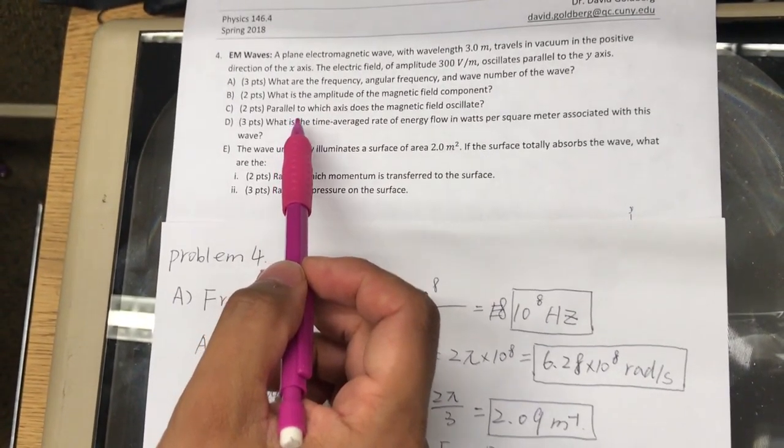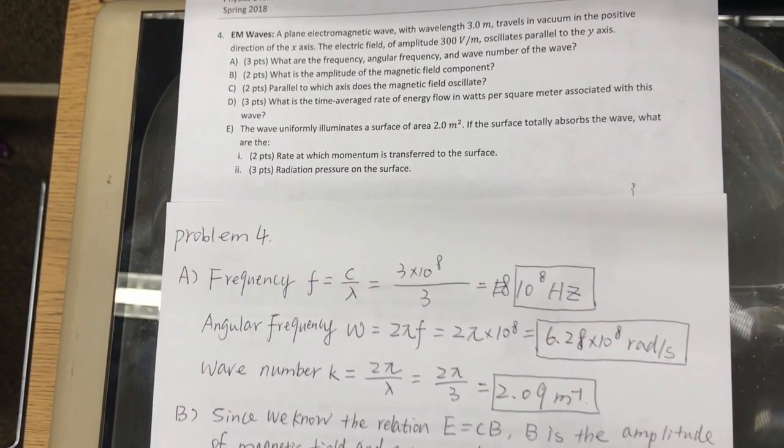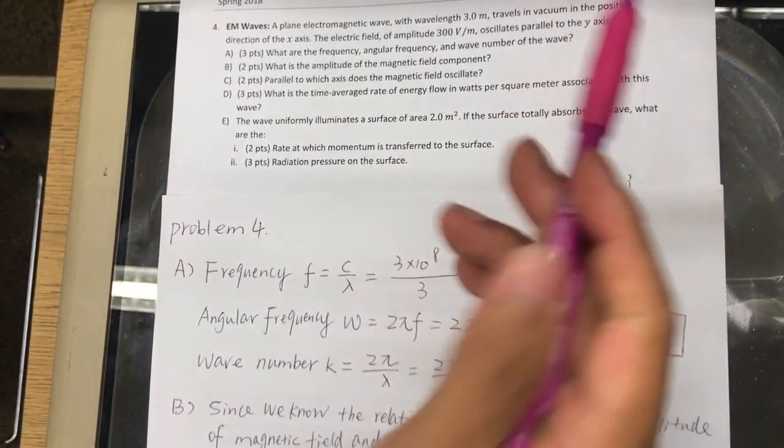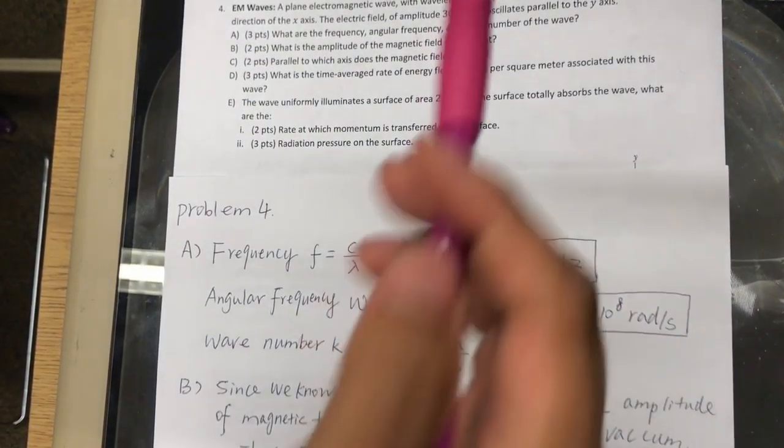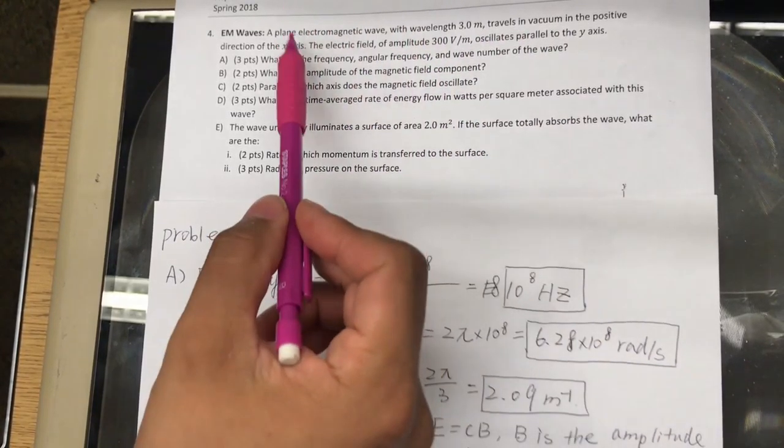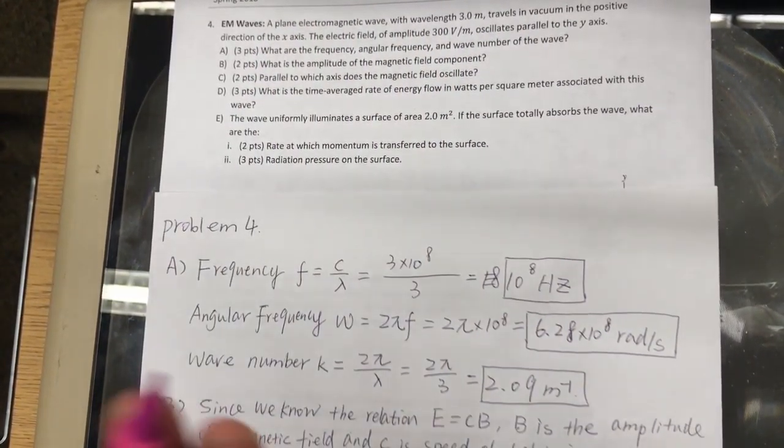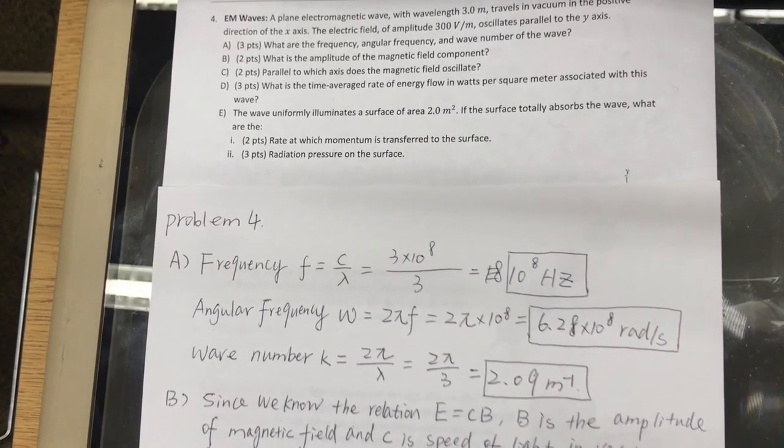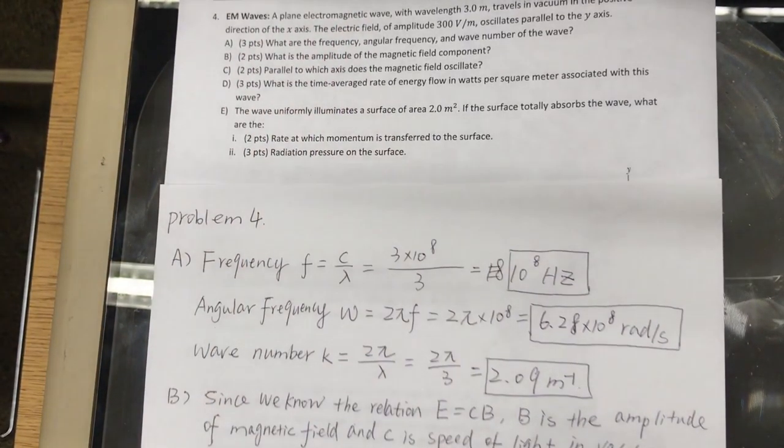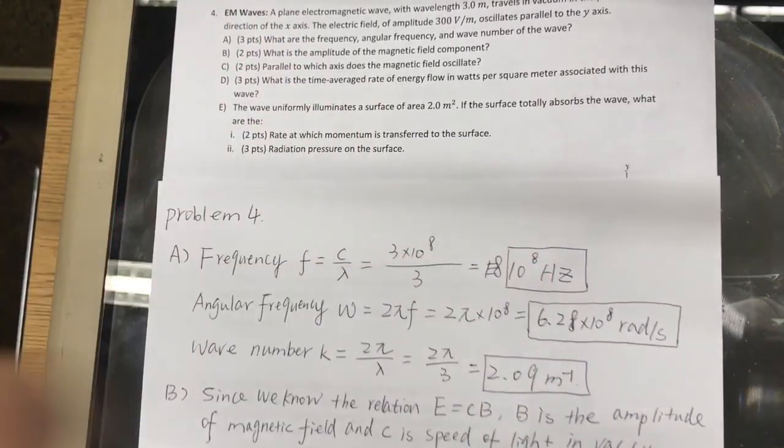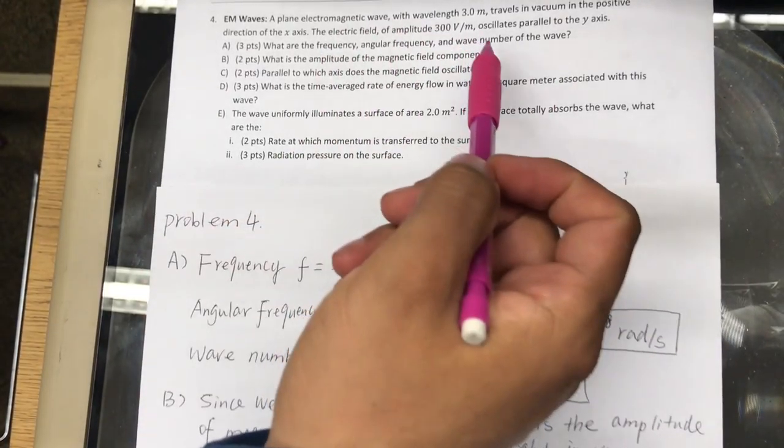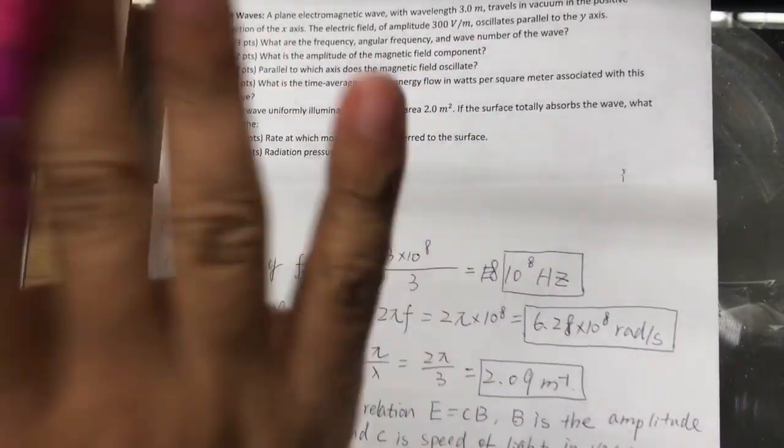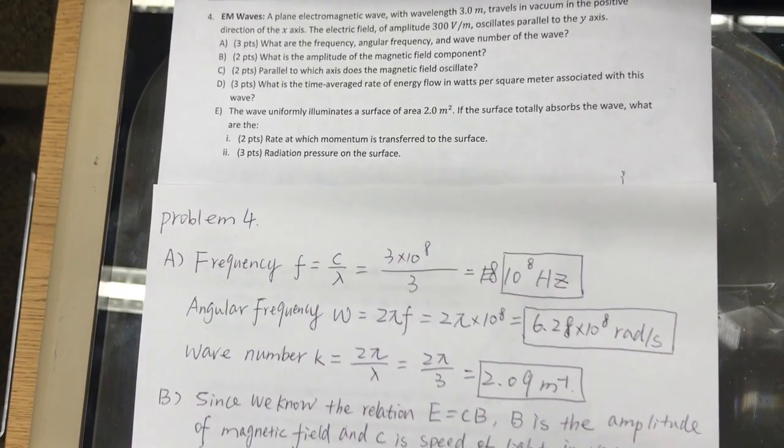Parallel to which axis does the magnetic field oscillate? Well, it's definitely not going to be the y-axis, because electric field and magnetic field are perpendicular. It says that it's traveling, the wavelength is traveling in the x direction. So, if the wave, the light, the electromagnetic wave is traveling in the x direction, and the magnetic field oscillates in the y direction, that means that the magnetic field must also travel in the x direction, but oscillate in the z-axis, along the z-axis, and that is what we got along the z-direction.